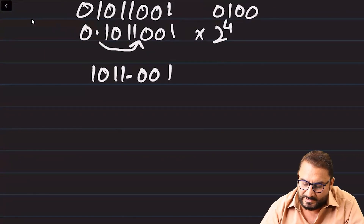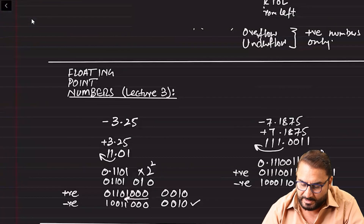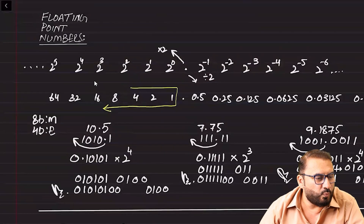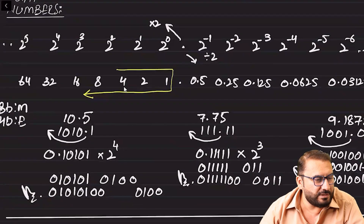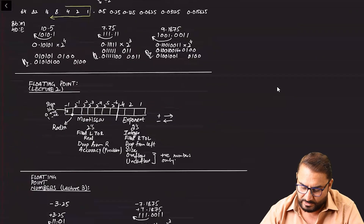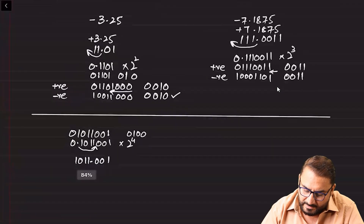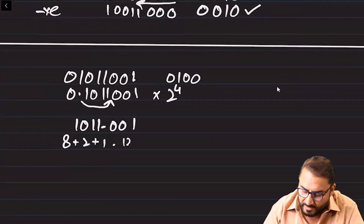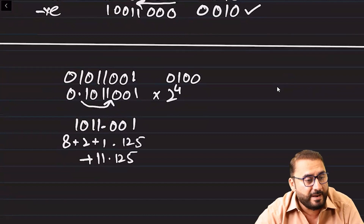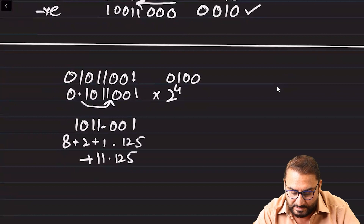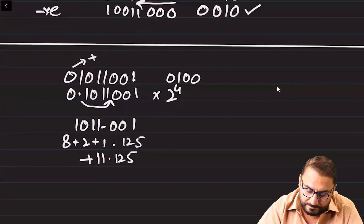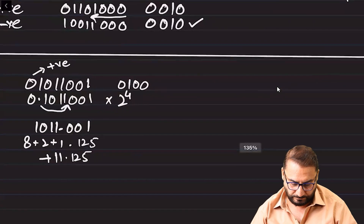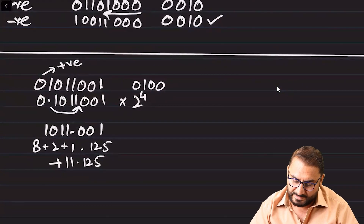So we have 1011.0001. On the left side: one, two, four, and eight. On the right side: 0.5, 0.25, 0.125. This gives us eight plus two plus one equals eleven, plus 0.125, so the answer is 11.125. And obviously since the original number was positive, we put a positive sign in front of it.